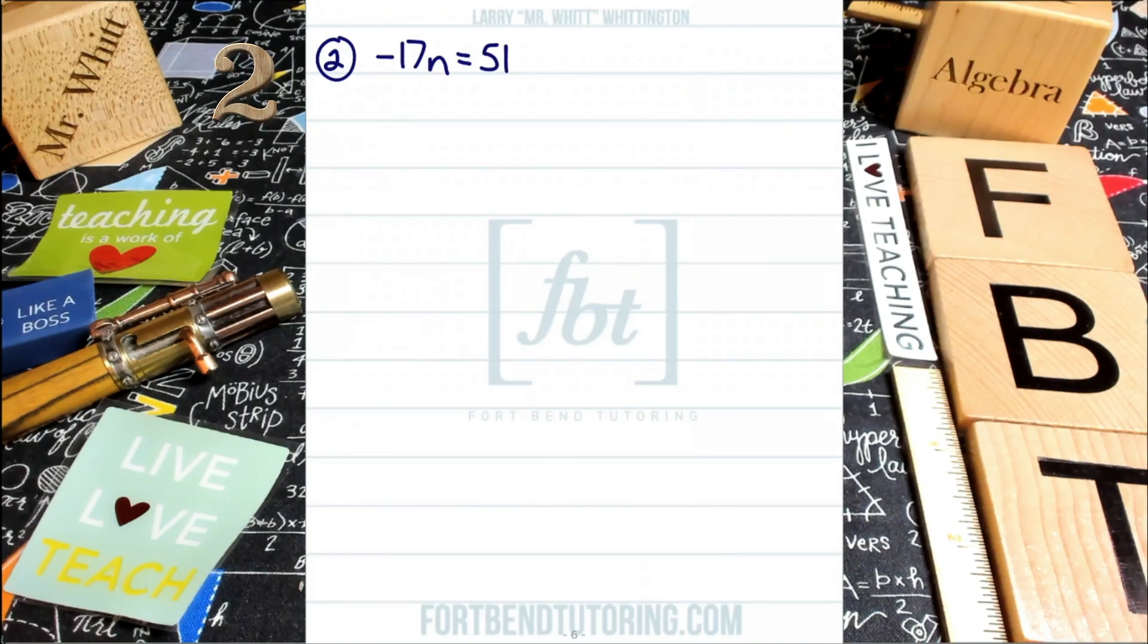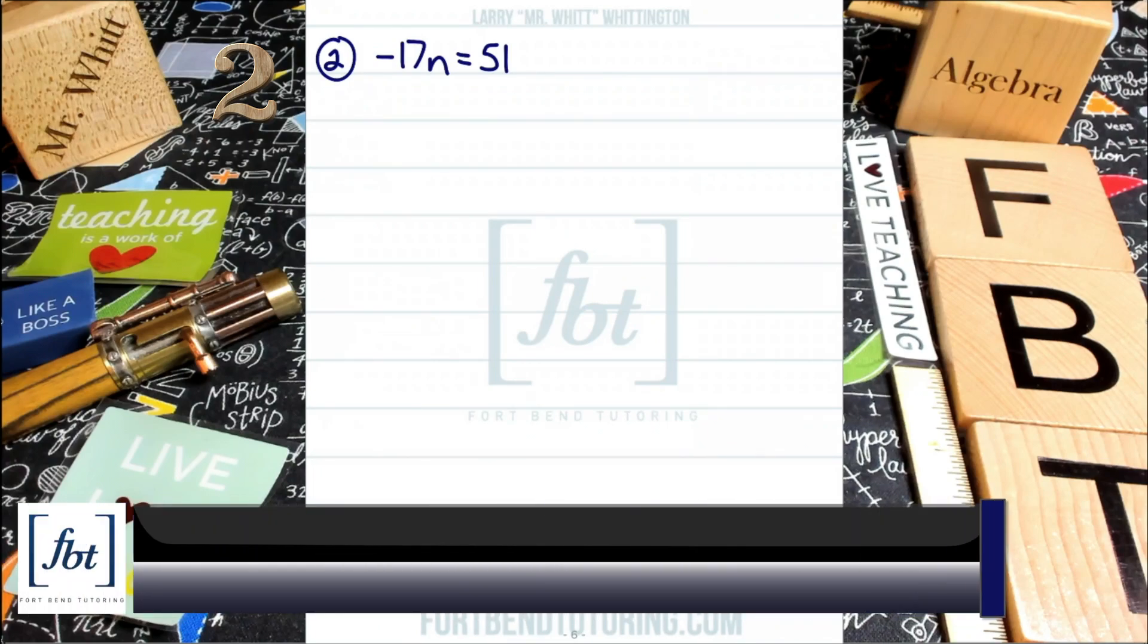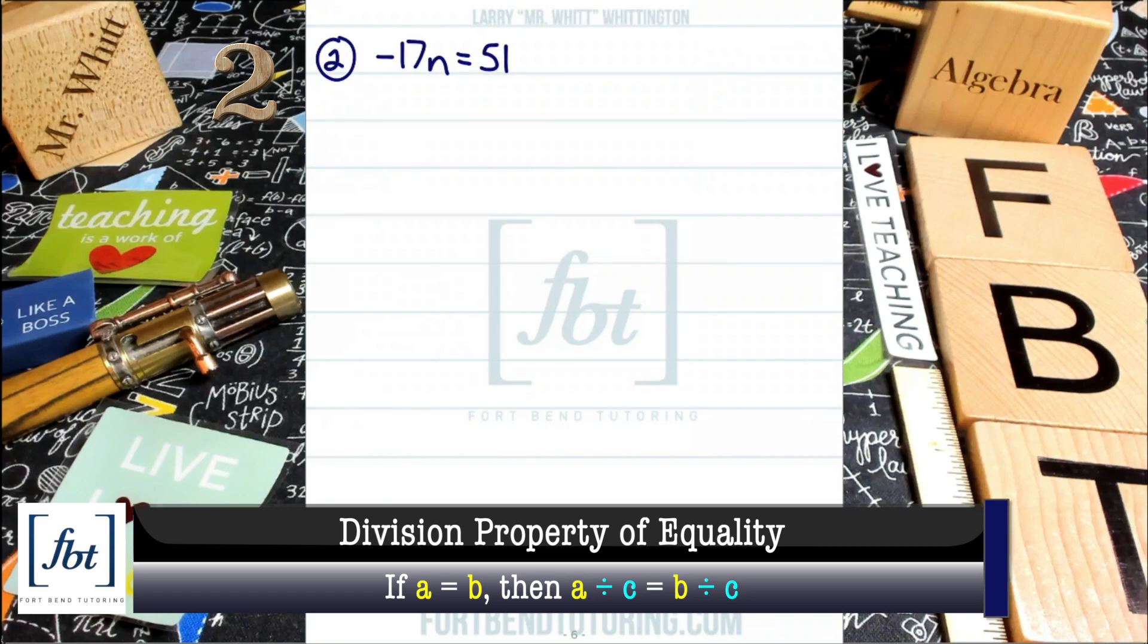In problem number two, we have another one-step linear equation. Your first thing to do is analyze this. Find out what's going on. Here we have negative 17N equals 51. Anytime you have a number in front of a variable, the assumed operation is multiplication. And just like in our previous problem, you want to do the opposite operation in order to isolate the variable. So since negative 17 is multiplying our variable N, we're going to use the division property of equality. Once again, using that opposite operation in order to isolate the variable.